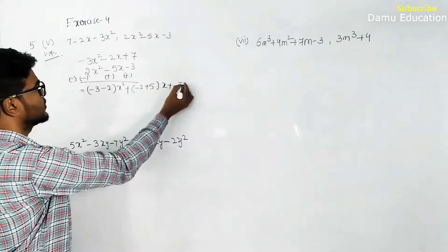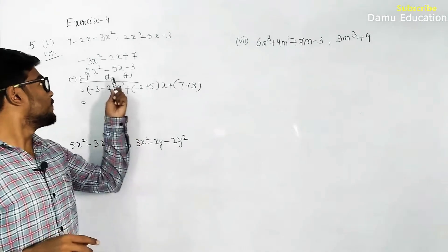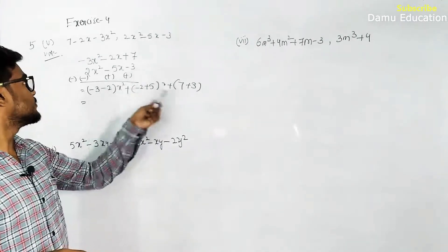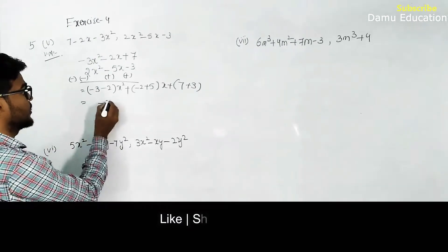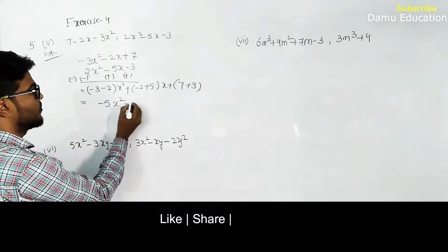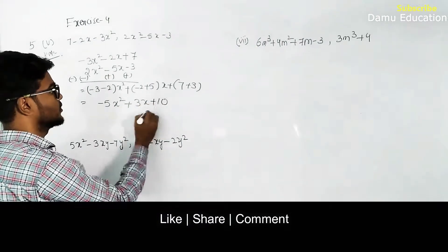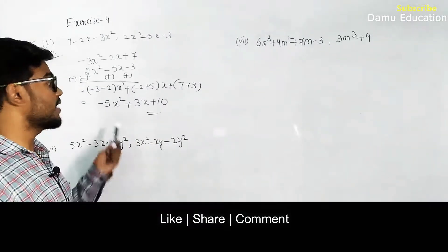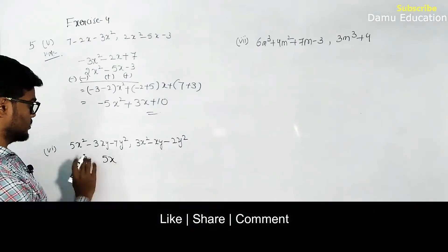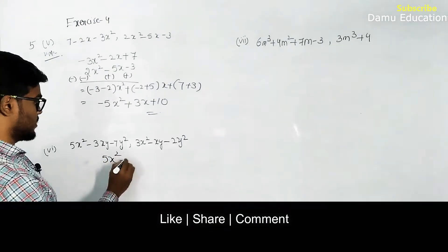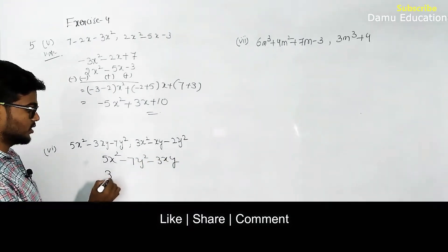Now: 3x squared minus 2x squared gives x squared. Then minus 2x plus 5x gives plus 3x. Then plus 7 plus 3 gives plus 10. So the answer is x squared plus 3x plus 10. Wait — the x squared coefficient: 3 minus 2 gives 1, so the answer is x squared plus 3x plus 10.